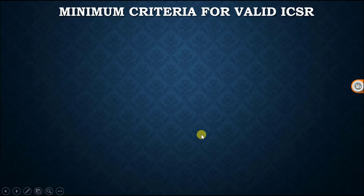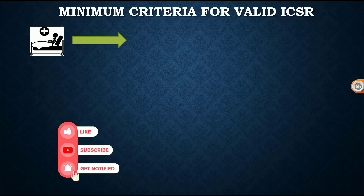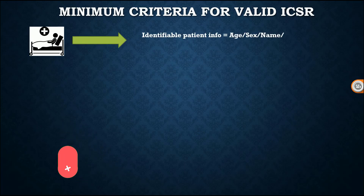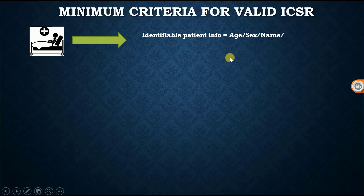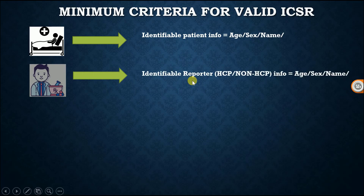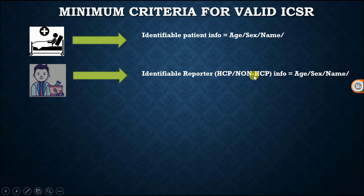What are the minimum criteria for a valid ICSR? First, it requires one identifiable patient — information such as age, sex, name, and various other details about the patient. Second, it requires an identifiable reporter — the reporter may be a healthcare professional or non-healthcare professional, and age, sex, name, and other information of this person are required.